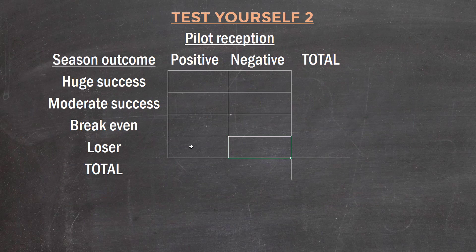Cool, so once again I'm going to construct for myself this joint probability distribution, noting that there are four outcomes of this first season of the new show. Either it's a huge success, a moderate success, it breaks even, or it's a loser. And there are two possible outcomes for how the pilot's received.